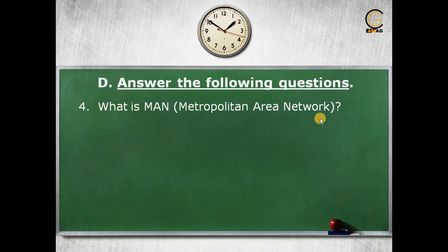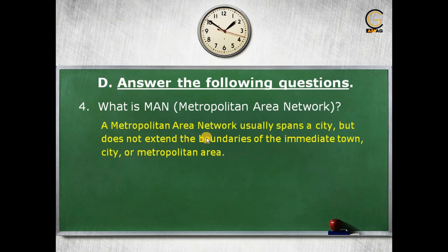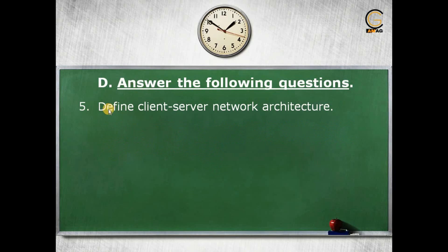Next question: what is MAN? MAN stands for metropolitan area network. A metropolitan area network usually spans a city but does not extend beyond the boundaries of that city or metropolitan area. If you need to set up a connection within a city only, you use MAN. A good example is cable TV, as it covers only the city. MAN is only used within the city boundary.